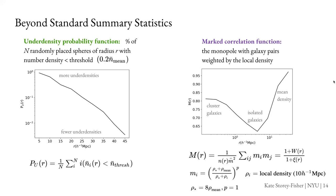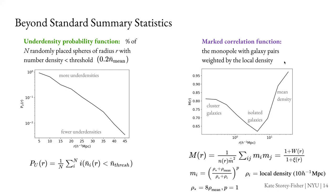Just the details of the marked correlation function — we get to choose what mark we use, so we played around with the exact form of the weighting by the local density and chose something that balanced how much it changed across our test sample: not wildly fluctuating, but also not so well constrained that it's not informative. We do the same procedure and construct Gaussian process emulators for these beyond-standard statistics as well.